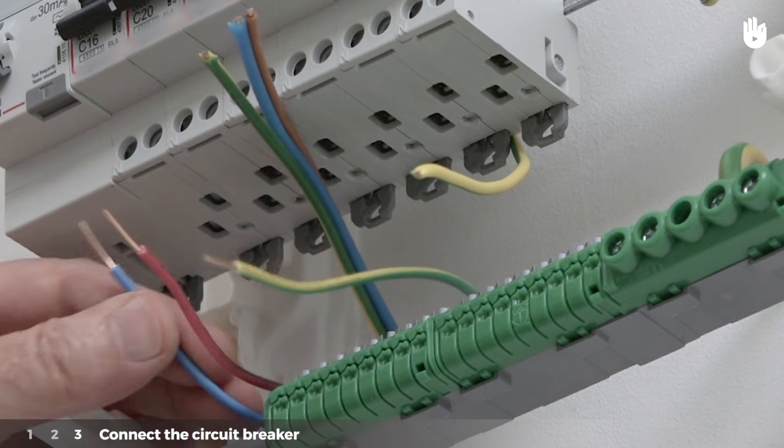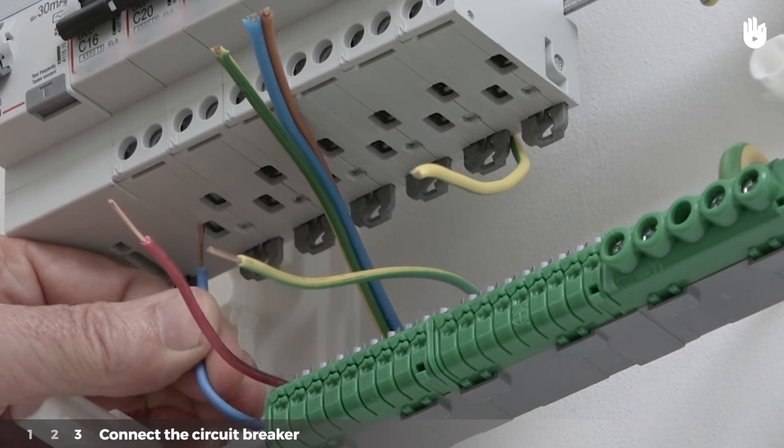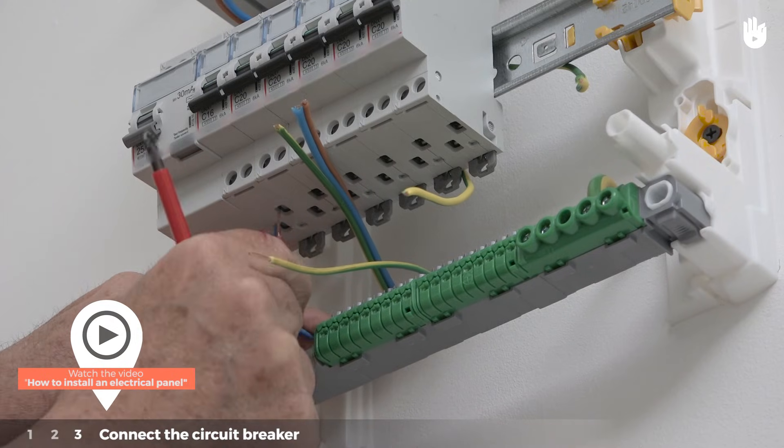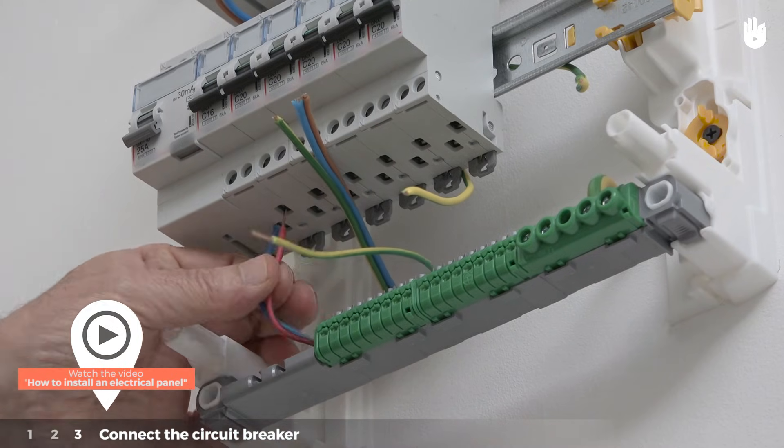Lastly, connect the conductors for this circuit to the terminals at the bottom of the circuit breaker. To do this, please watch the video, How to install an electrical panel.